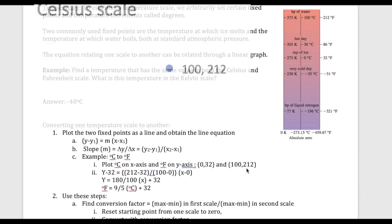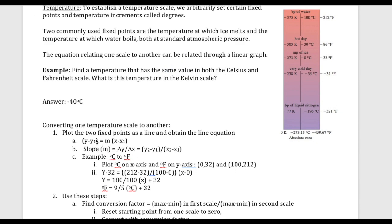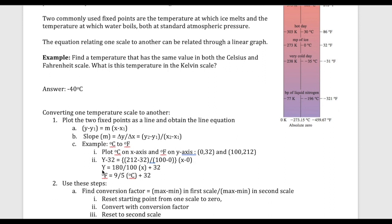To get your conversion equation, you use y - y₁ = m(x - x₁). So y - 32 equals m, and m is the slope. How do I get the slope? I take the difference in the y value, which is 212 - 32, over the difference in the x value: (212-32)/(100-0). That's your slope, multiplied by (x - x₁), which is (x - 0).